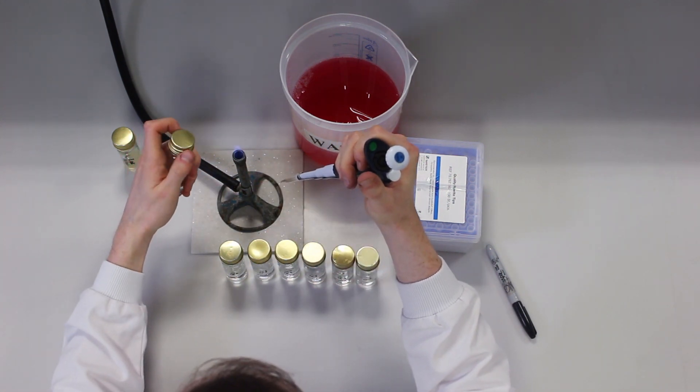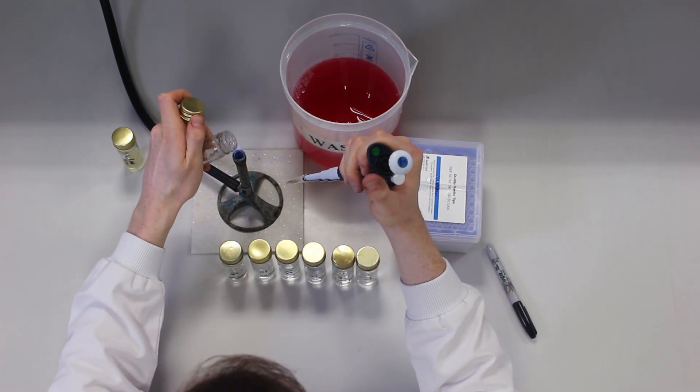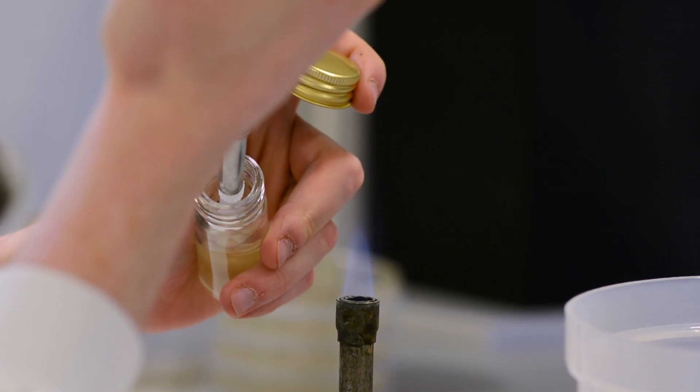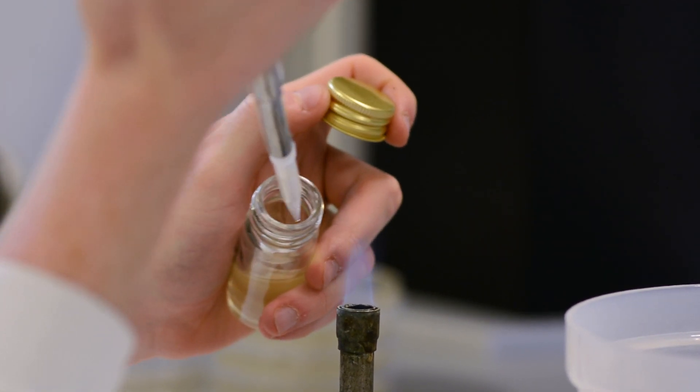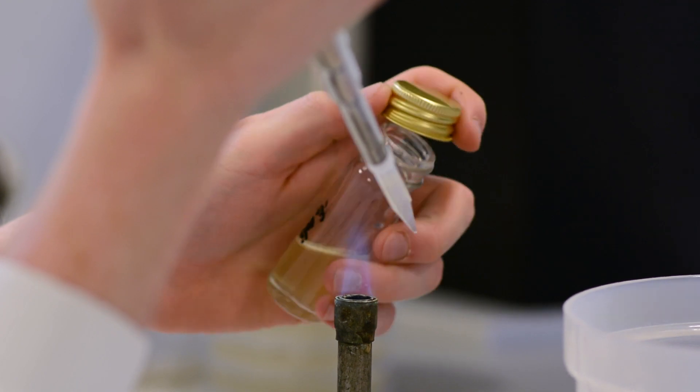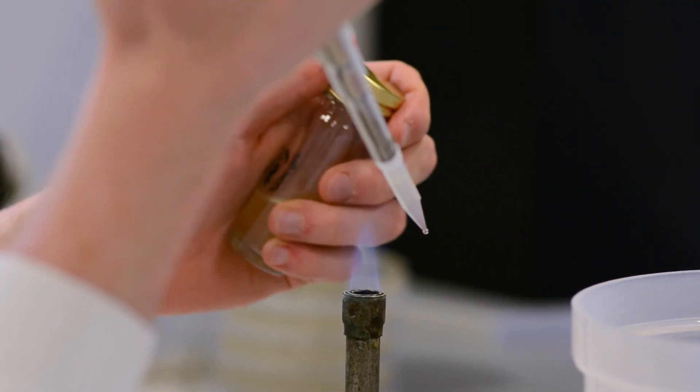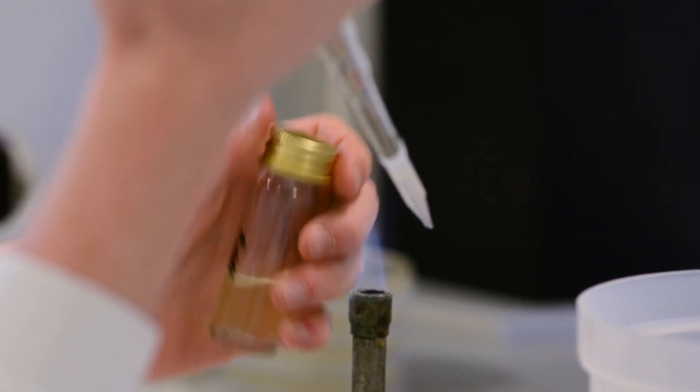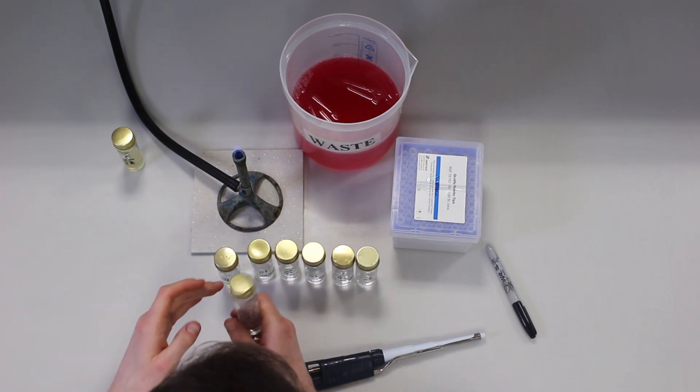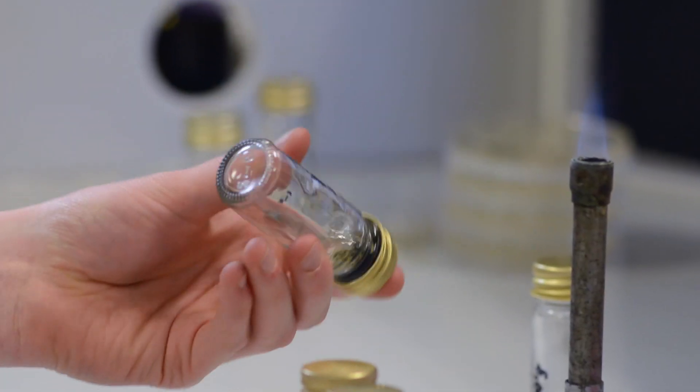Take the bottle of Ringer's solution labeled 10 to the minus 1, remove the lid, flame the neck of the bottle and dispense the culture into the liquid. Flame the neck of the bottle and replace the lid firmly to avoid spillage. Discard the pipette tip into the waste pot. Gently mix the bottle.